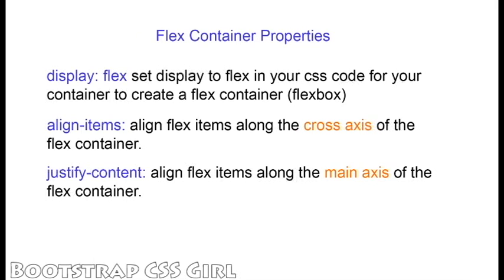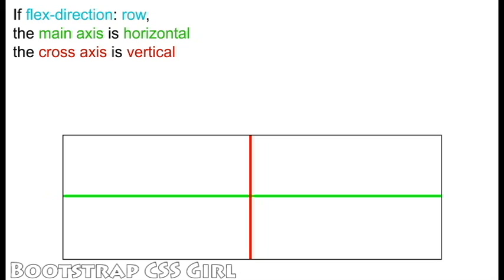The topic of this tutorial is alignment of the FlexItems within the FlexContainer. FlexItems are aligned along the main and/or cross axis of the container. We use the JustifyContent property to align FlexItems along the main axis, and the AlignItems property to align FlexItems along the cross axis.